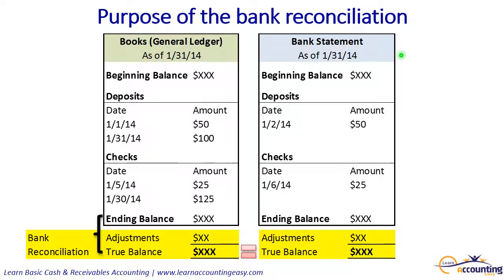Likewise, over here with the bank statement as of January 31st, we have a beginning balance, deposits increasing the balance, checks decreasing the balance, and then an ending balance. We can start with this ending balance and in the bank reconciliation document make certain adjustments to arrive at that true cash balance.